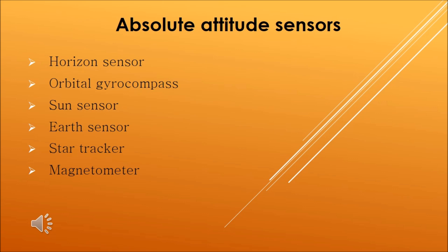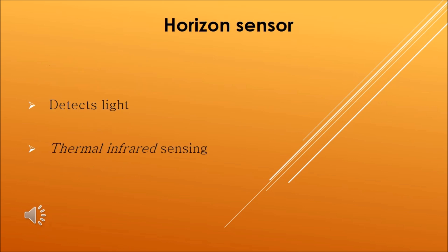Now we will discuss about absolute attitude sensors. They are of six types: horizon sensor, orbital gyro compass, sun sensor, earth sensor, star tracker, and magnetometer. Now one by one we will discuss about each one.